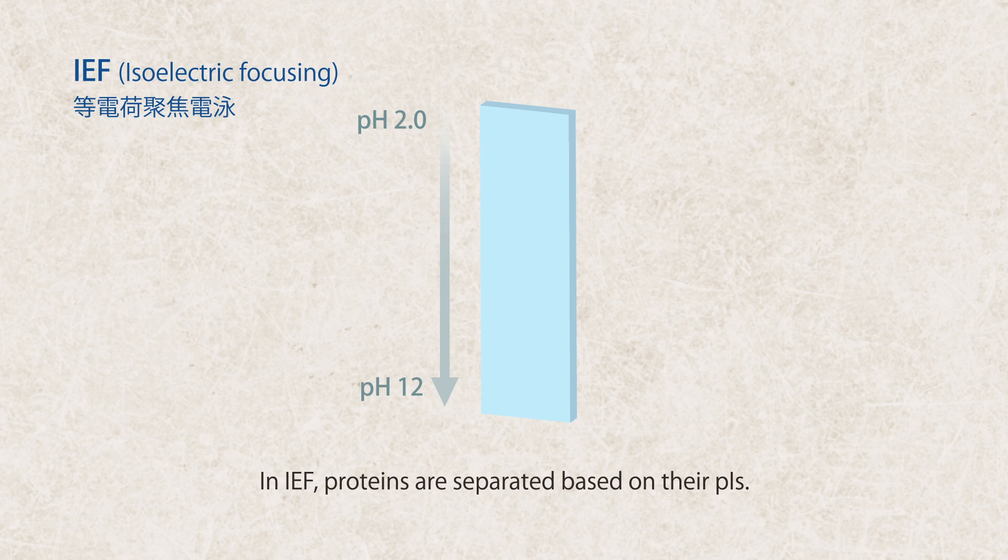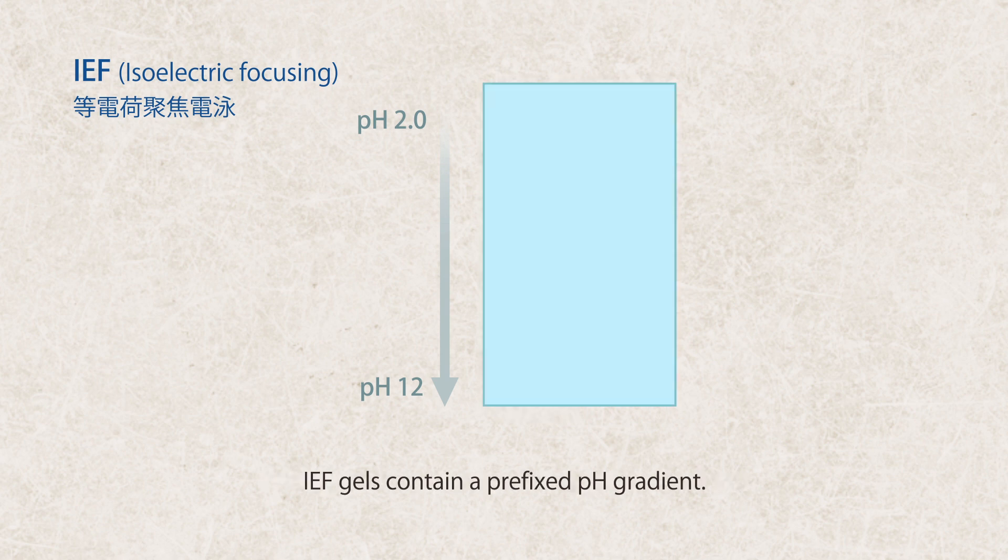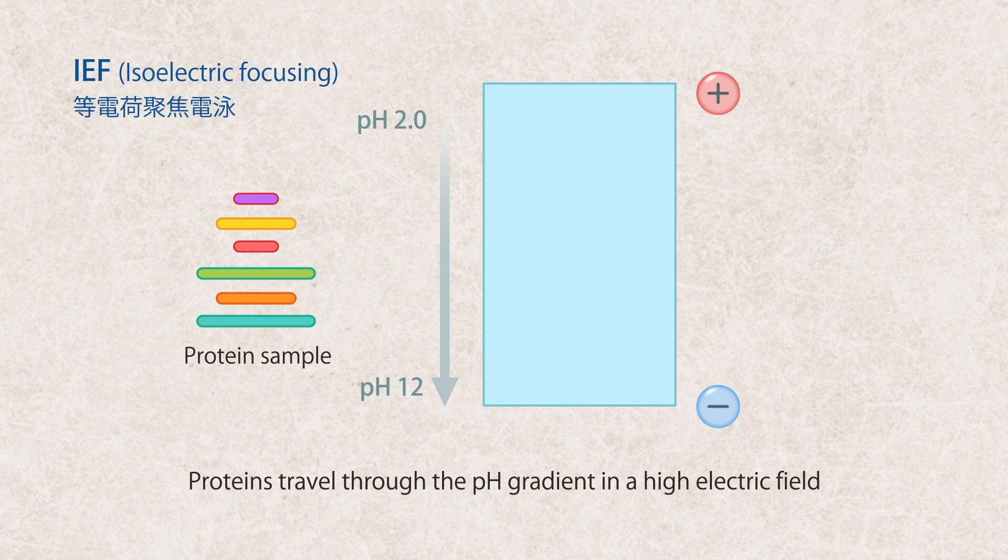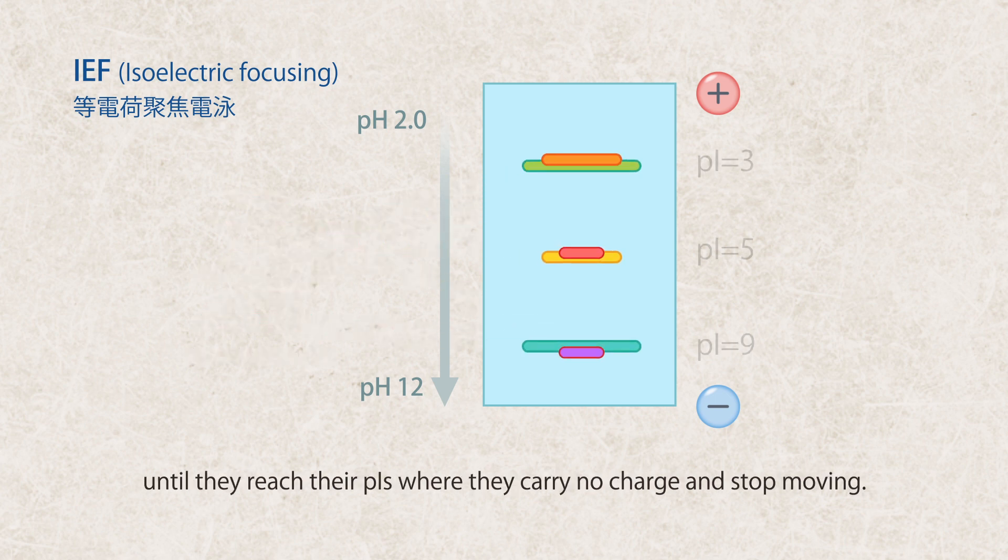In IEF, proteins are separated based on their PIs. IEF gels contain a prefixed pH gradient. Proteins travel through the pH gradient in a high electric field until they reach their PIs, where they carry no charge and stop moving.